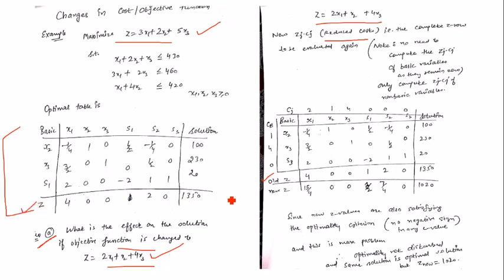The old z row is shown here; the new zj − cj values will be written separately. We also need to recompute the objective function value. The cb vector (cost of basic variables) is noted from the new objective function: cost of x2 is 1, cost of x3 is 4, and cost of slack variable s3 is 0.